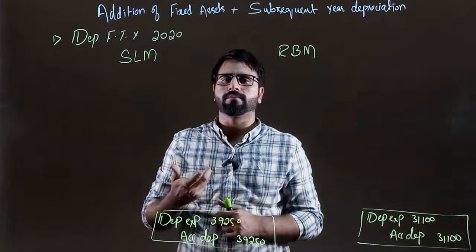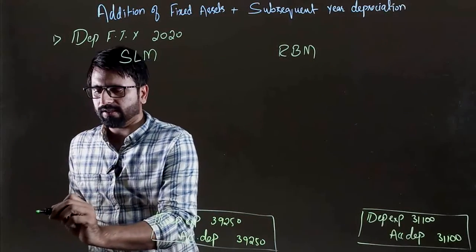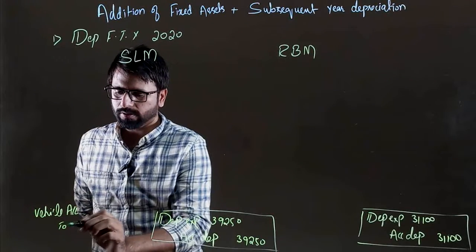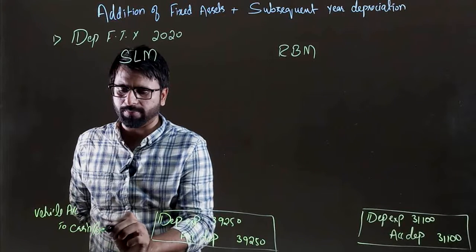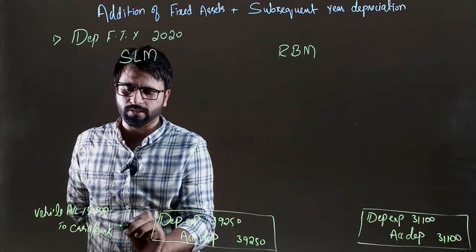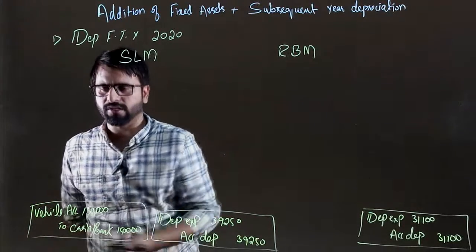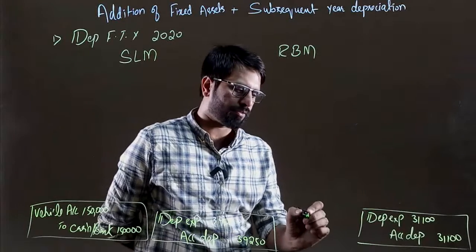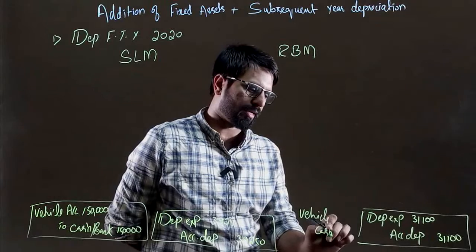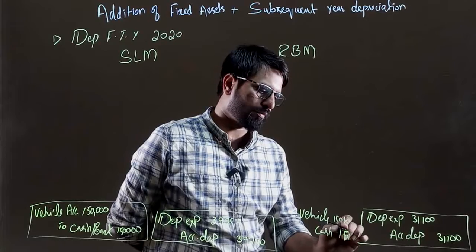One journal entry is when we bought assets. When we bought assets, what is the journal entry? We bought a vehicle — vehicle debit, to cash or bank credit. We bought a vehicle for 150,000. In both methods, the journal entries didn't change. Vehicle debit, vehicle to cash, 150,000.